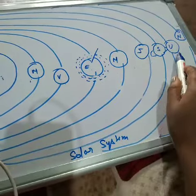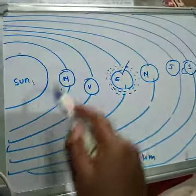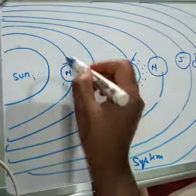All these are eight planets and this is the orbit of these planets. This is the way for revolving around the Sun.